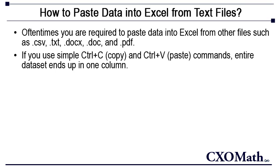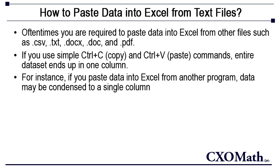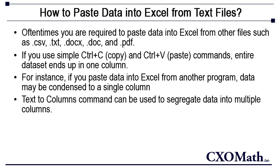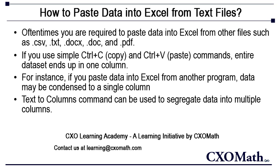When we use simple Ctrl-C and Ctrl-V commands, the entire data set ends up in one column, and at times in one cell — i.e., several columns of data are condensed into a single column, making it impossible to calculate or play around with the data in Excel, thereby making it totally incomprehensible.